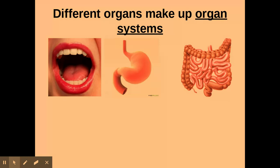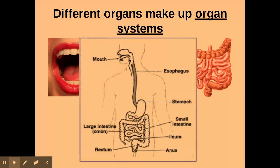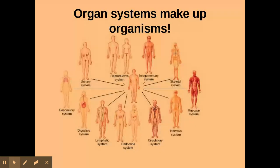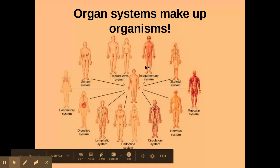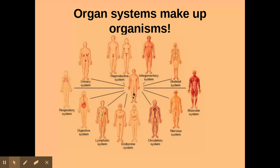So for example, these different organs on that slide all form the digestive system, or part of the digestive system. Like I said, you have to say 'organ system' and not just 'system'. Now all those organ systems you can see here on the outside of this diagram all work together to make up the whole organism, such as yourself.